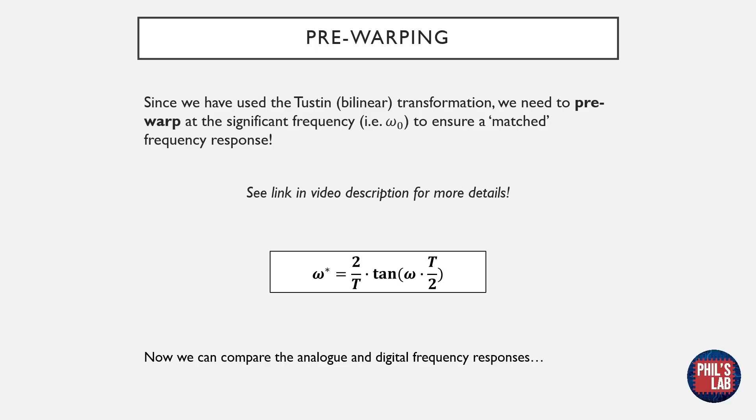But we need to do what's called a pre-warp of the significant frequency of our filter. In our case, this is the center frequency of our notch. This pre-warping ensures a matched frequency response, as otherwise the response would be shifted by an amount. We can pre-warp our notch frequency by plugging it into this equation, and then use the pre-warp frequency in our final filter implementation.